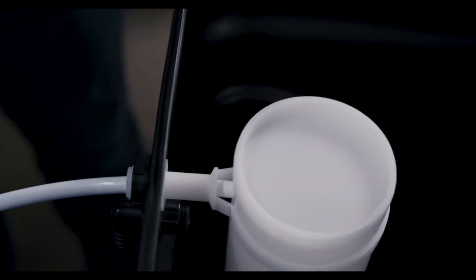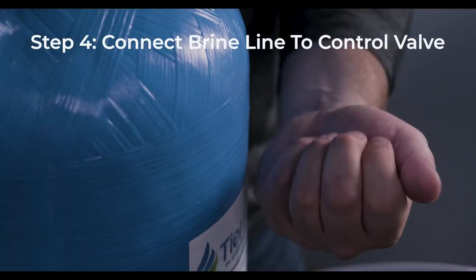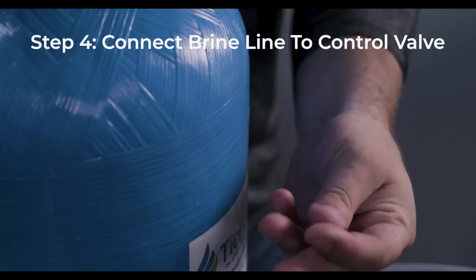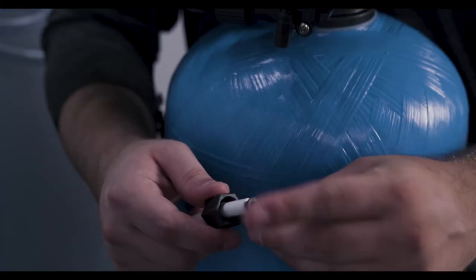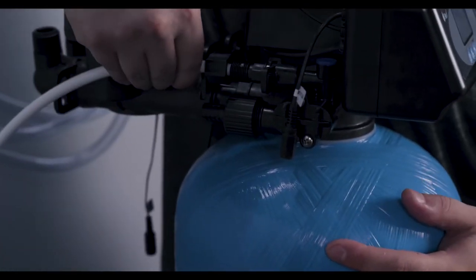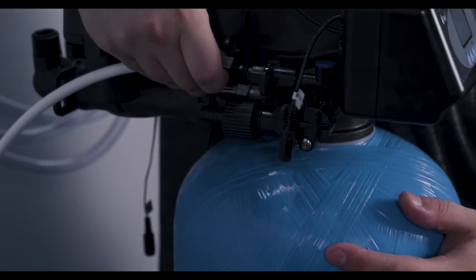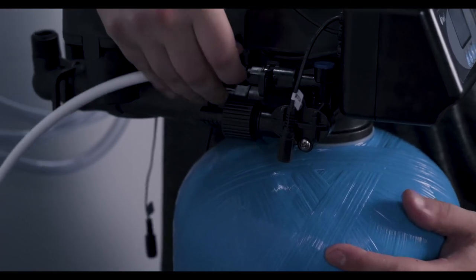Replace the brine well cap. Locate the brine line compression nut and filter screen. Slide the nut over the end of the brine tube. Insert the filter screen into the end of the brine tube. Push the brine tubing firmly into the brine line connector on the control valve. Hold it firmly as you tighten the nut onto the brine line connector.